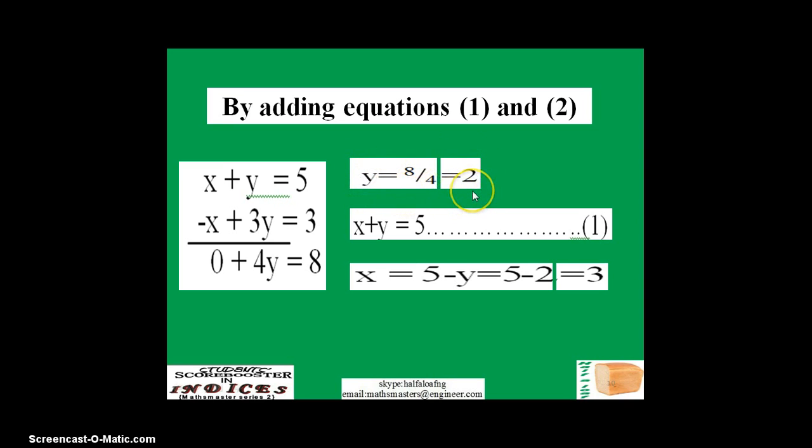Now that I have the value of y, I need to find that of x. What I'm going to do is use one of the two equations. It is advisable, especially when you are dealing with JAMB questions, to use the simplest of the two simultaneous equations. Because this one is simpler than this, I'm just going to take this. I want to find x, I already know my y, so I will make x the subject of the formula. x equals 5 minus y. Now my y is 2, so I substitute here. I'm gonna have 5 minus 2, and 5 minus 2 equals 3. My answer is this.